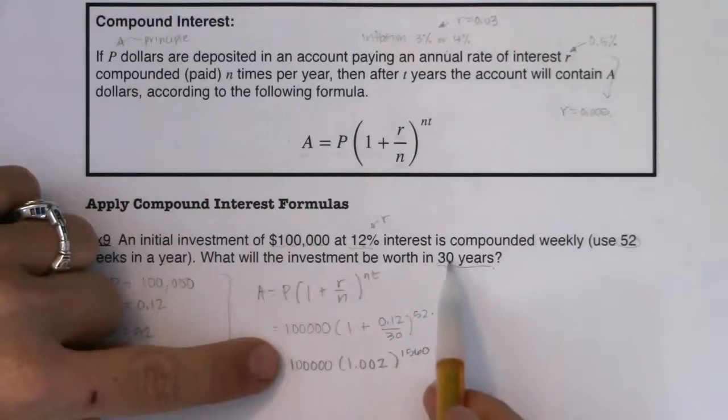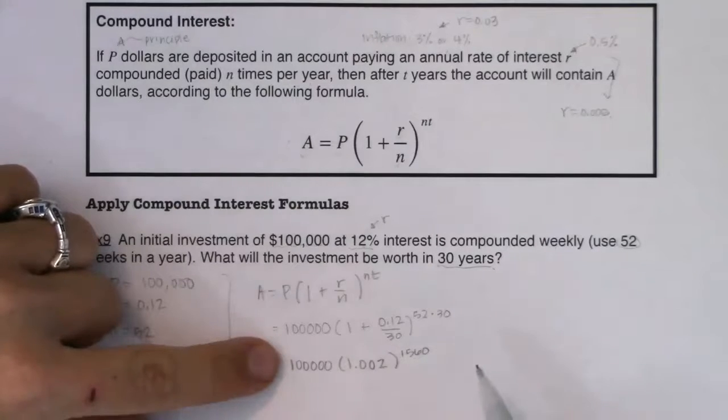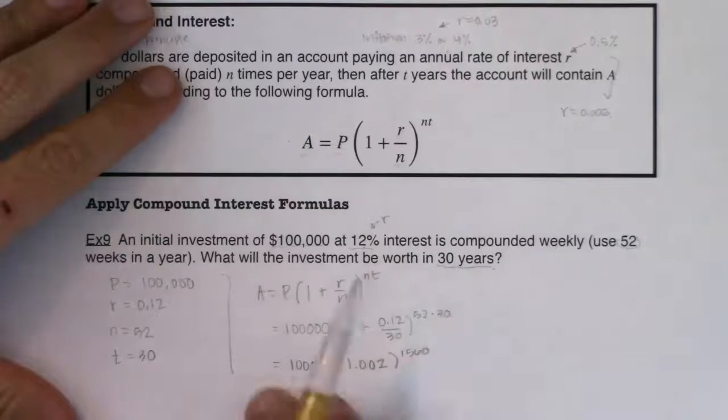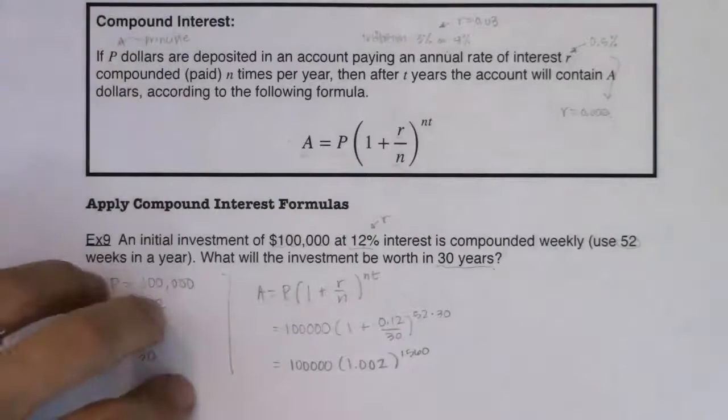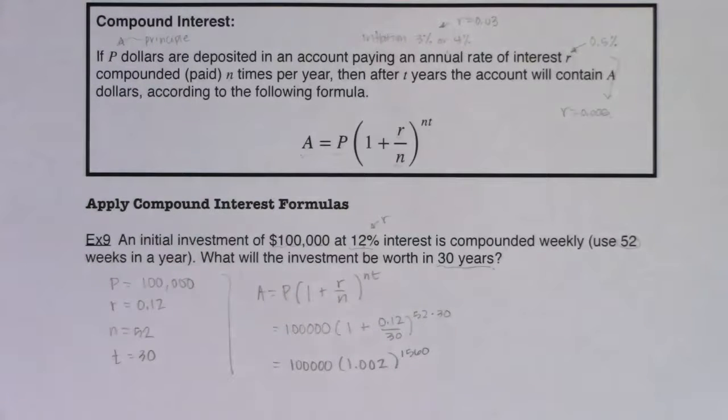And because I'm going to leave it in there for 30 years and we've got 52 weeks per year, I'm going to be getting interest about 1,560 times, not even about exactly. Now it's up to you how you want to crunch this. I want to show you that exponential growth and for that matter exponential decay, it's really susceptible to decimal round off. And let me show you what I mean by that.